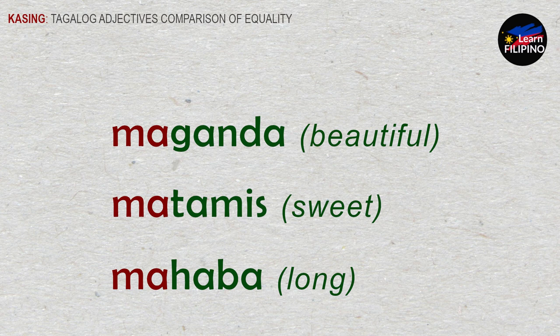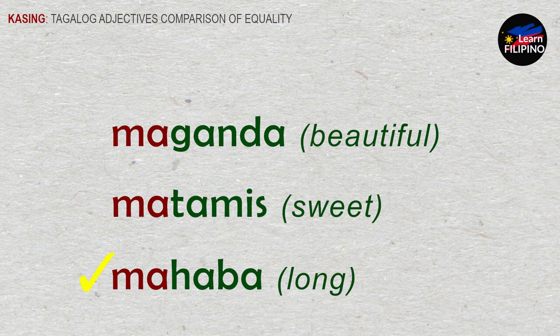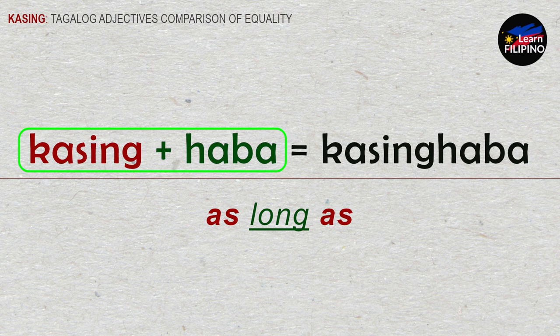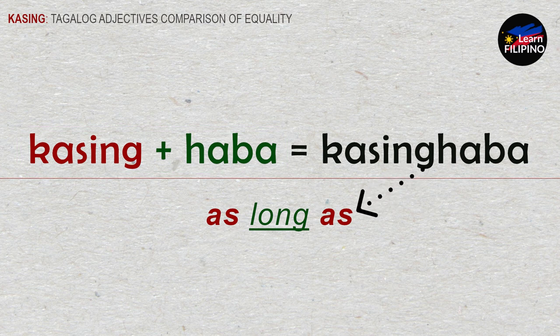Here are three ma-adjectives showing their respective root words. Maganda, meaning beautiful — root word is 'ganda'. Matamis, or sweet — root word is 'tamis'. Mahaba, meaning long — root word is 'haba'. Simply add the prefix 'kasing' before the root word to form a comparative phrase. For example, kasing plus haba is 'kasing haba', which translates to 'as long as'.